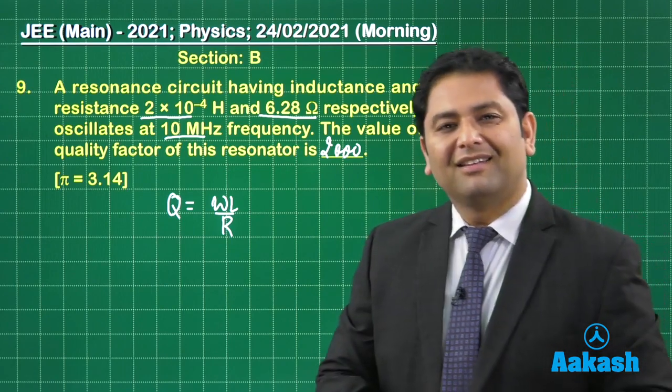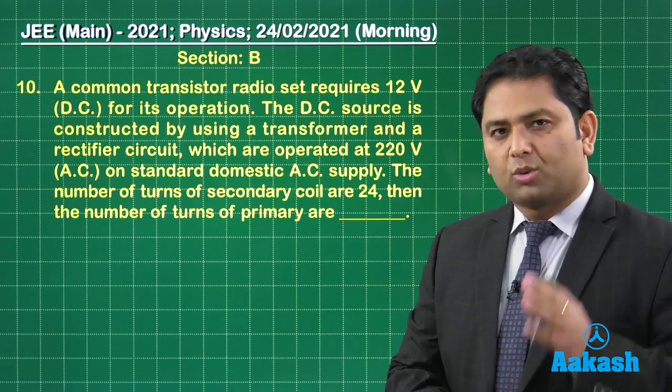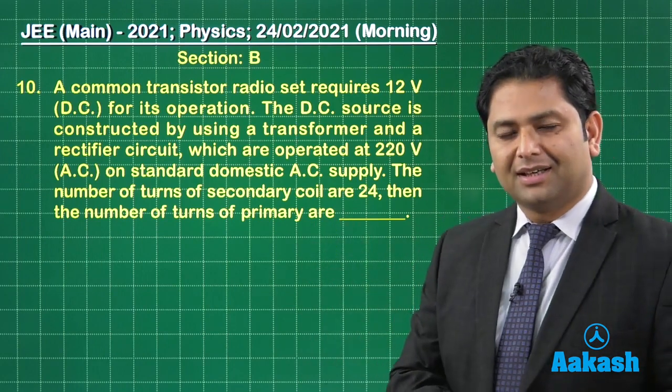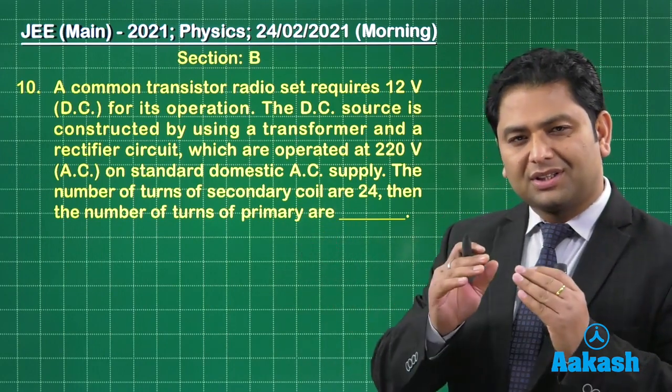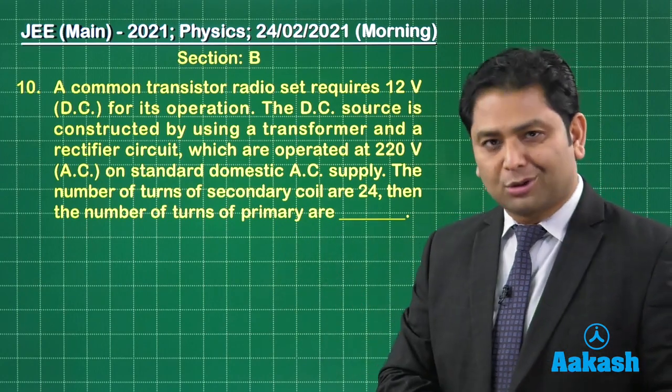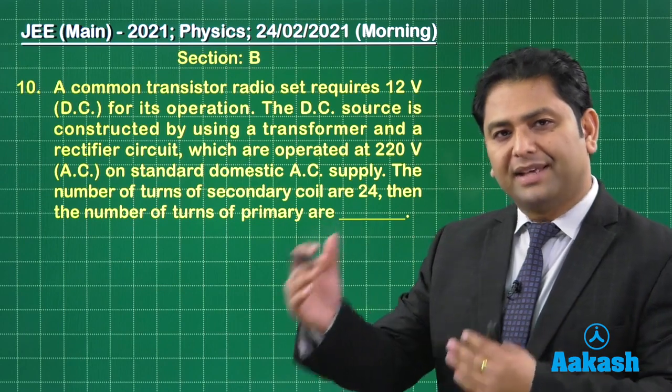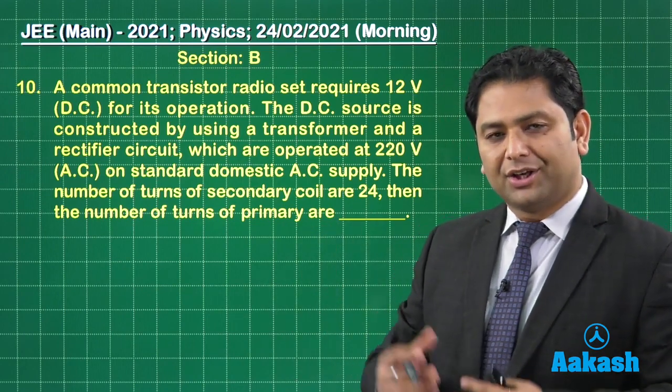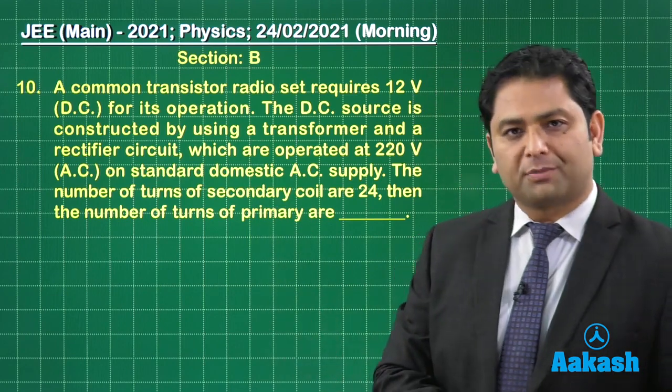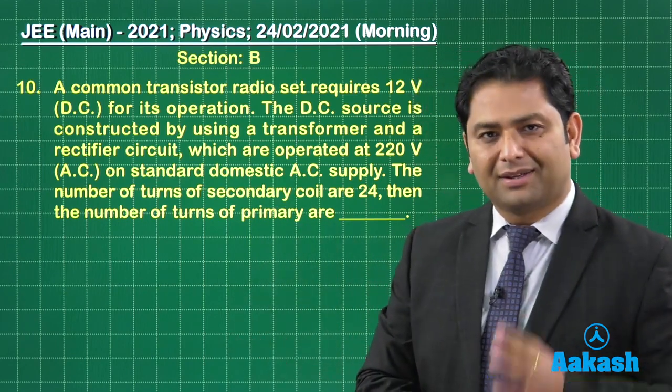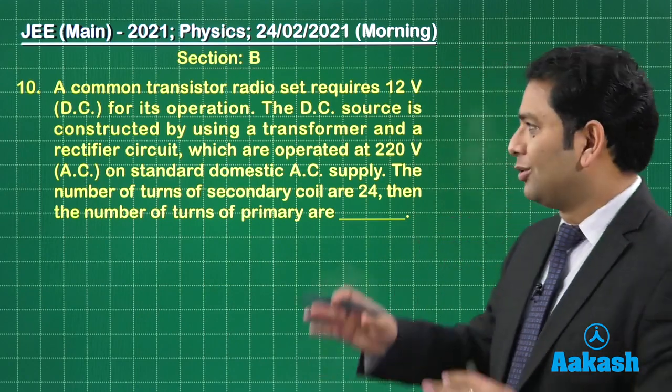So that was question number nine, let's see question number 10. Question number 10, again, the next one from semiconductor, but this time the question is a bit incomplete in terms of the information that it had to give. So based on the answer provided by the JE main counsel, we are giving you the interpretation that what could have been probably implied by the examiner.